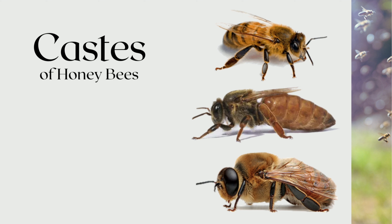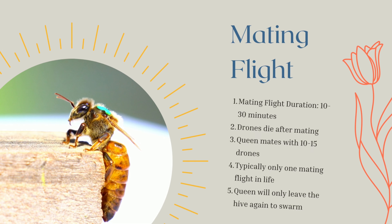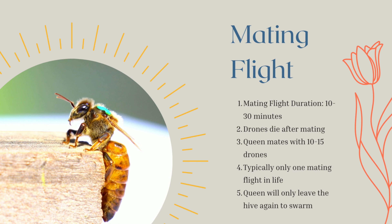First, let's talk about honeybee castes. Within the hive, there are three castes of honeybees. The worker, a female bee who does all the work within the hive — from foraging for food to guarding the hive, caring for brood, and cleaning. They do everything but lay eggs and mate. Then there's the queen bee, a fully fertile female who lays up to 1,200 or 1,500 eggs a day, and the drone bee, the male bee, whose purpose is to mate.